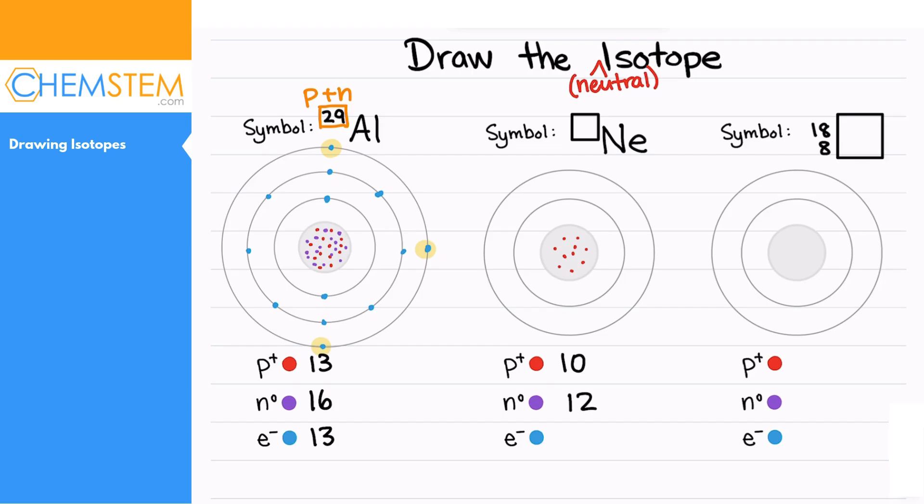We also have to draw in those 12 neutrons: 1, 2, 3, 4, 5, 6, 7, 8, 9, 10, 11, 12. Remember that the sum of protons and neutrons is the mass number, which we can see is 22. It wasn't given, but now we know it.